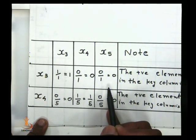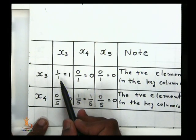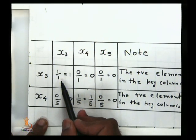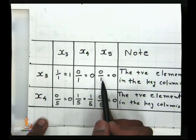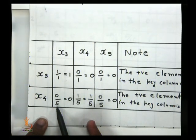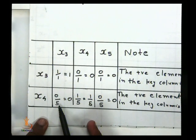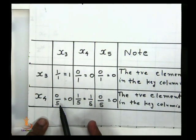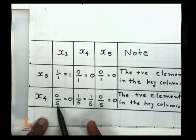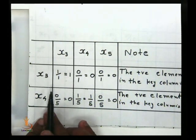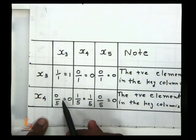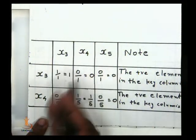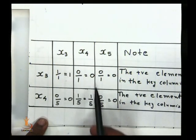The denominator we are seeing is the number in the key column for each row. For the x4 row, the element in the key column is 5 - that is the key element. We divide by this key element to find the ratio. We check column by column, left to right.